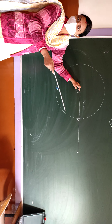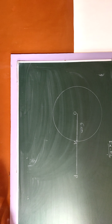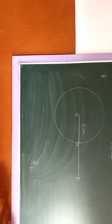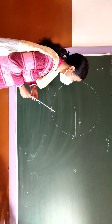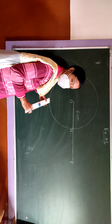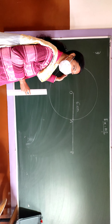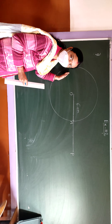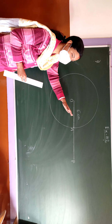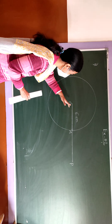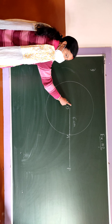That means OP is 6 plus 4 equals 10 centimeters. You can take point P on any side — from the center, measure 10 centimeters in any direction.